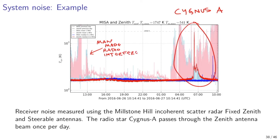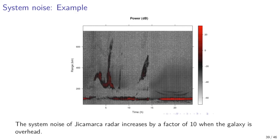Here is another example: the Jicamarca radar uses a very low frequency of 49.92 MHz, so cosmic radio noise is more powerful due to the sky noise power dependence on frequency. The plot shows measured radar echo power over 24 hours. At earlier hours, the galactic plane is overhead; at this time, receiver noise power increases by a factor of 10, which is seen as noisier estimates of scattered power.